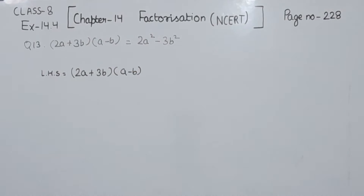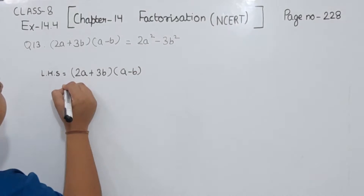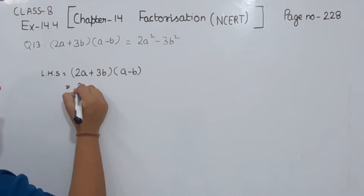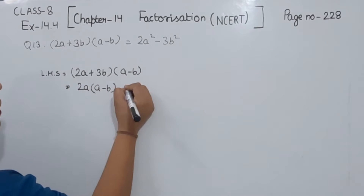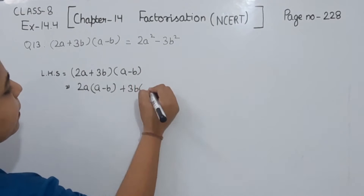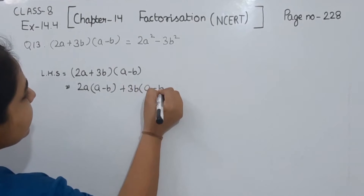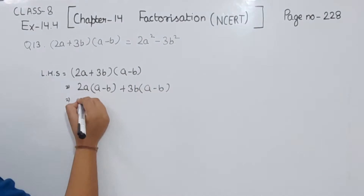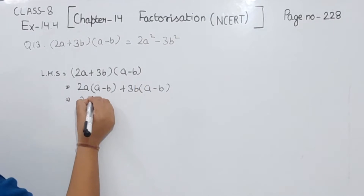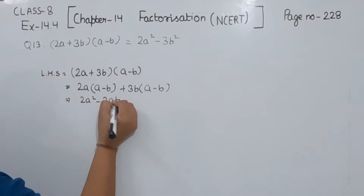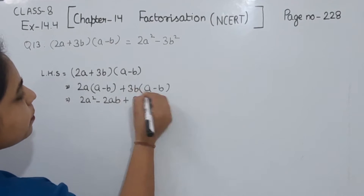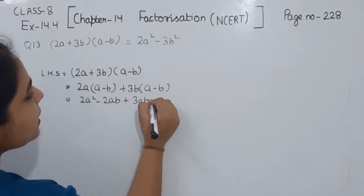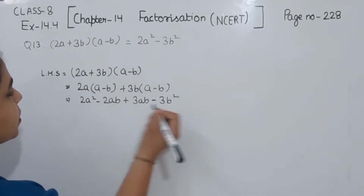Now we are going to solve this. Taking the left hand side: 2A multiplied by (A − B) plus 3B multiplied by (A − B), which gives us 2A² − 2AB + 3AB − 3B².